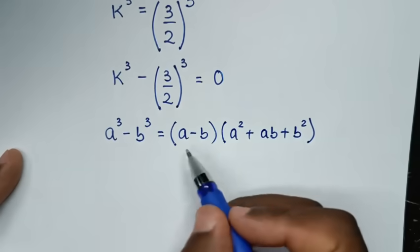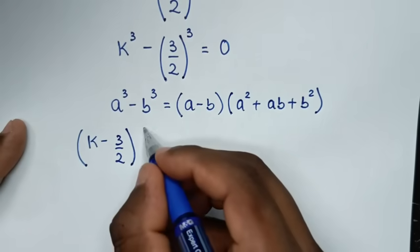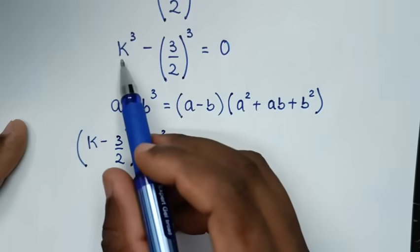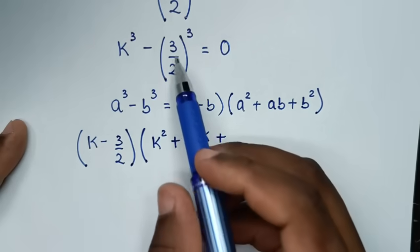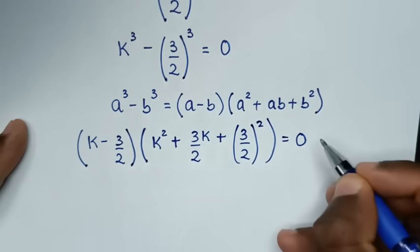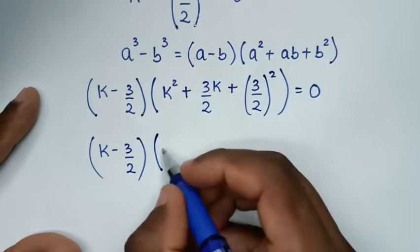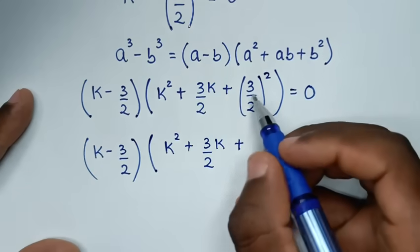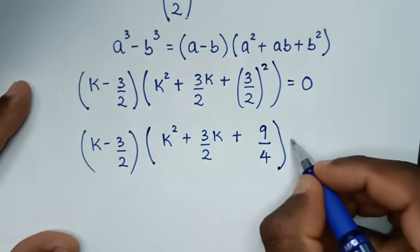Applying the rule, it becomes (k minus 3 over 2), then bracket: a squared gives k squared, plus a times b gives k times 3 over 2, which is 3 over 2 k, plus b squared gives (3 over 2) squared. So we have (k minus 3 over 2)(k squared plus 3 over 2 k plus 9 over 4) is equal to 0.